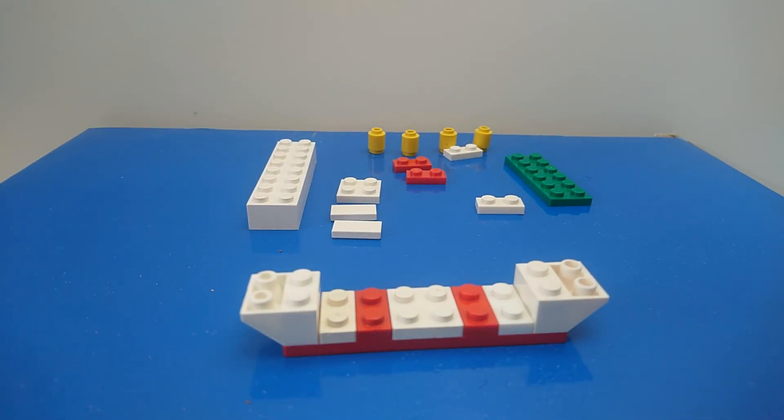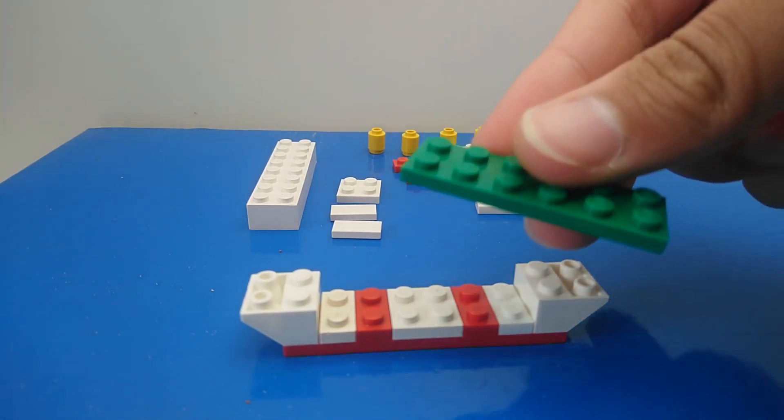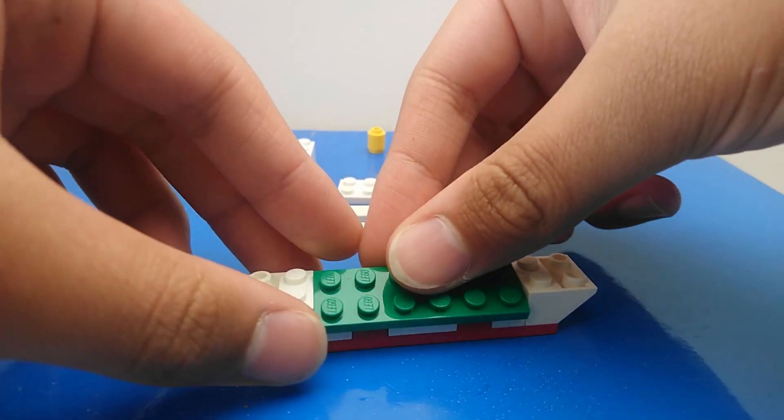Now to do the green dash across the body of the ship, going to take our 2x6 green plate and just going to place that right in the middle there like that.